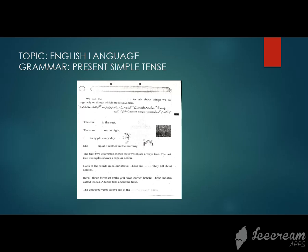I eat an apple everyday. This is daily routine, this is present simple tense. She wakes up at 6 o'clock in the morning. What is this called? She daily 6 o'clock in the morning. What is this called present simple tense.